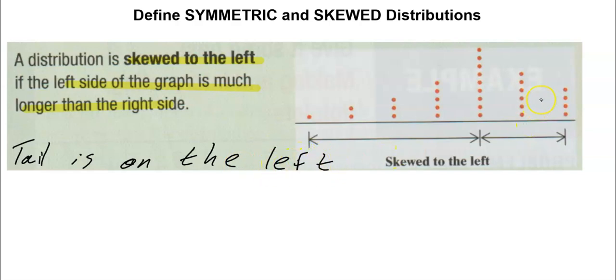The right side of my data is going to be taller than the left side. Skewed describes—it is more usual to be on the right.